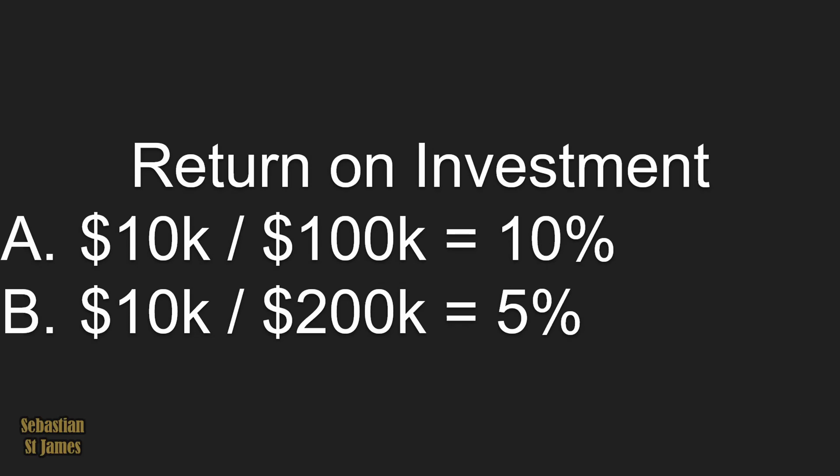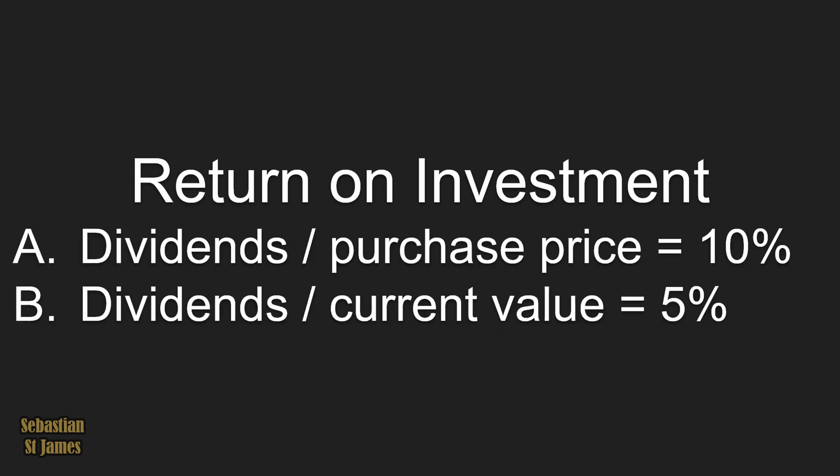$10,000 divided by $200,000 equals 5%. In other words, your return on investment is dividends divided by purchase price, or dividends divided by current value. Lock in your answer — once you've chosen, you don't get to change your mind. Have you chosen A for both, or B for both? Or maybe you chose A for one and B for the other, which would be very interesting.